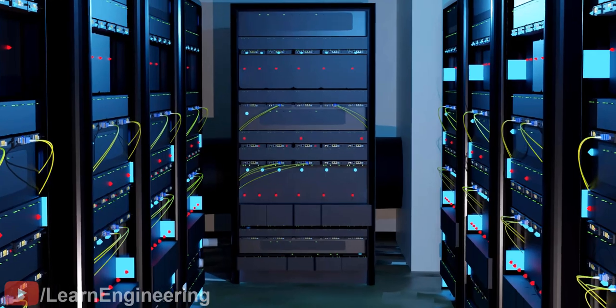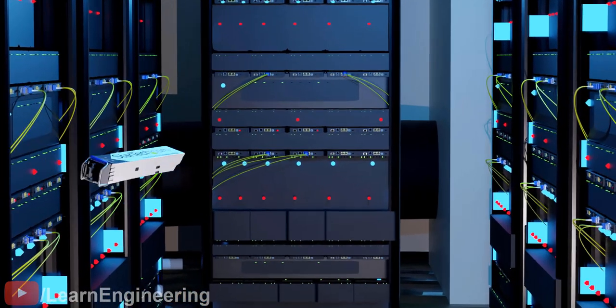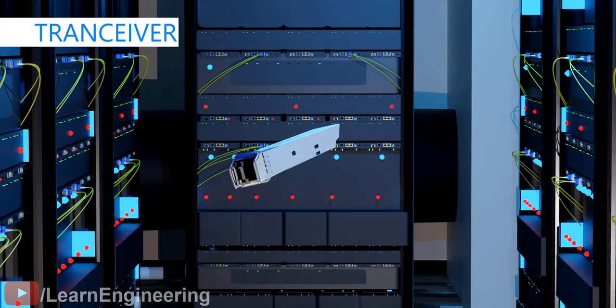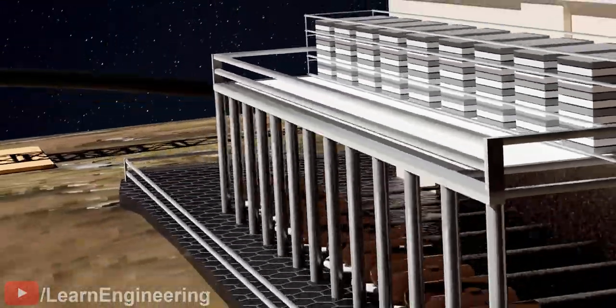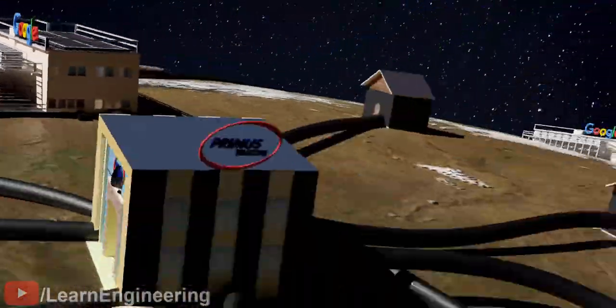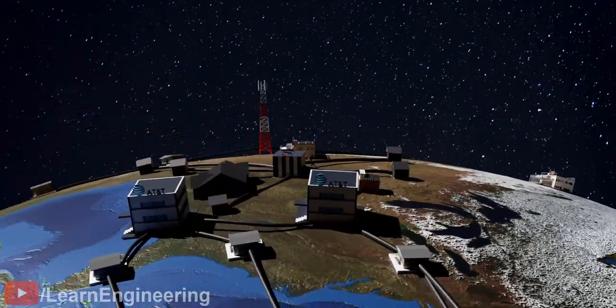In a data center, every server has a device called an SFP transceiver that sends and receives optical light signals. This device uses a laser to send light signals through an optical fiber cable. The bulk of the data transfer occurs through the optical fiber cable in the form of light.